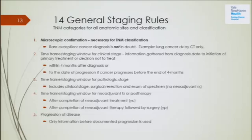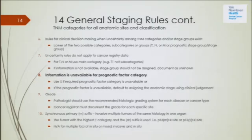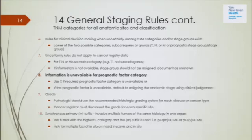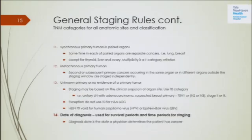There are 14 general rules in chapter one — it's very dense material, and it took me several weeks to get through it. This is the template for how we must stage, so I'll highlight just a couple of areas. To use AJCC staging, there must be microscopic confirmation. When information is unavailable for prognostic factor categories, you can use the X — that's acceptable. Worldwide, many registries will not have prognostic factor information, so we'll continue to use the TNM as our baseline, but here in the US and at Smilow we should include all required prognostic factors.